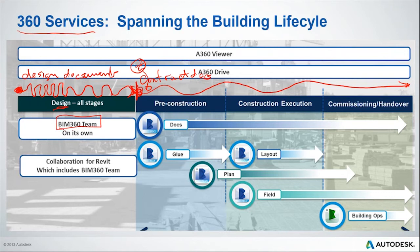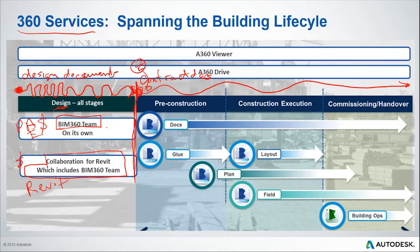This is where Team — or Collaboration for Revit, which includes Team — fits. You can buy them separately or just buy Team on its own. Team would be for the project architect or engineer who doesn't touch Revit, while C4R is meant for the Revit people or the AutoCAD people. We're talking about the design side of the line today. In future webinars, we'll cover BIM 360 Docs as it relates to contractual, document, and pre-construction/construction processes.